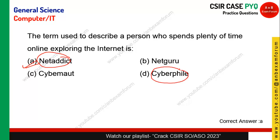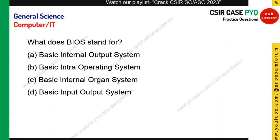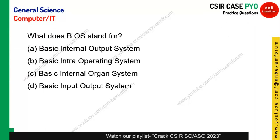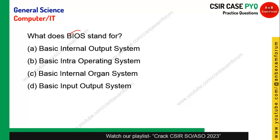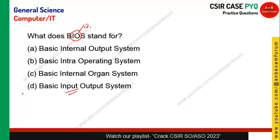What does BIO stand for? Whenever you see IO in IT or computer terms, it generally refers to input and output. So BIO stands for Basic Input Output. Option D is the right answer.